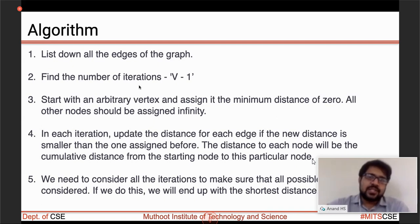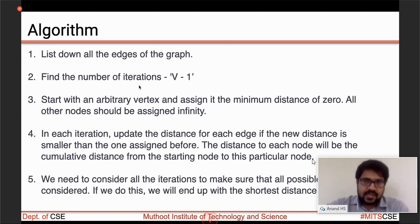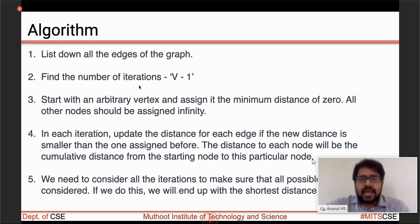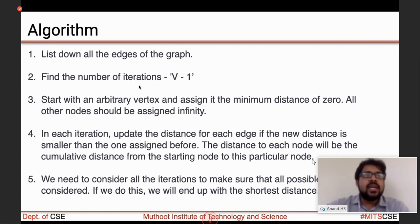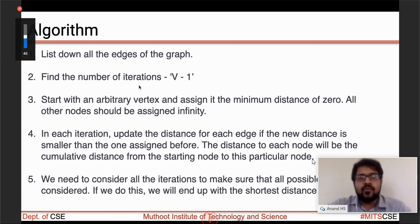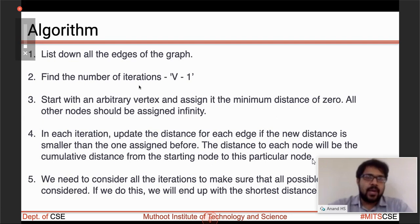The fourth step is called the relaxation step. In each iteration we update the distance of each vertex by calculating the weight of the particular edge plus the value assigned to the source vertex. We check if d(u) + w is less than d(v), and if so, update d(v). This process continues until all iterations are over, giving us the shortest distance.